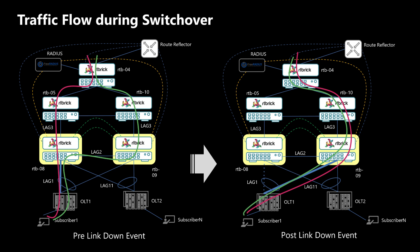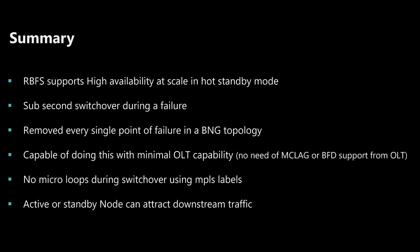With that we have come to the end of the demo. We have seen that in case of a network outage, RBFS can successfully switch over subscribers at scale to a different node, providing seamless experience to the user. RBFS can handle a node-down event smoothly as well. In summary: RTBrick supports high availability at scale with sub-second switchover time, removes every single point of failure with minimal OLT capability, no micro loops are seen during switchover even in transient time, and both active and standby nodes can attract downstream traffic and redirect it to the correct subscriber. Thanks for watching — if you have any questions or want to know more, please contact us.